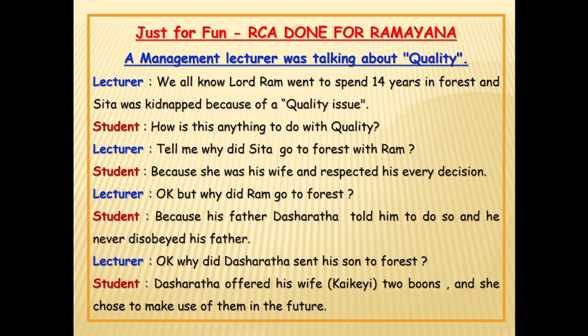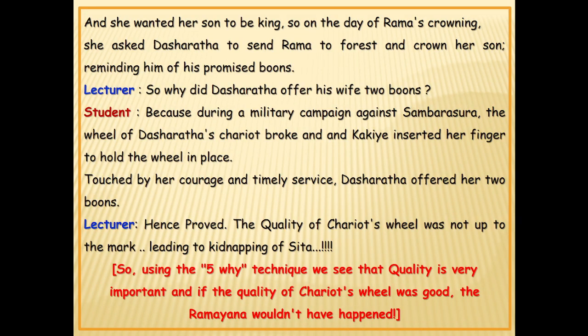Just for fun: RCA was done for the Ramayana while a management lecturer was discussing the importance of maintaining quality. We all know Rama went to spend 14 years in the forest and Sita was kidnapped because of a quality issue. During a military campaign, the wheel of Dasaratha's chariot broke and his wife Kaikeyi inserted her finger to hold the wheel in place. Touched by her courage and timely service, Dasaratha offered her two boons. She chose to make use of them in the future, and on the day of Rama's crowning she used the boons to want her son to be the king, asking Dasaratha to send Rama to the forest instead.